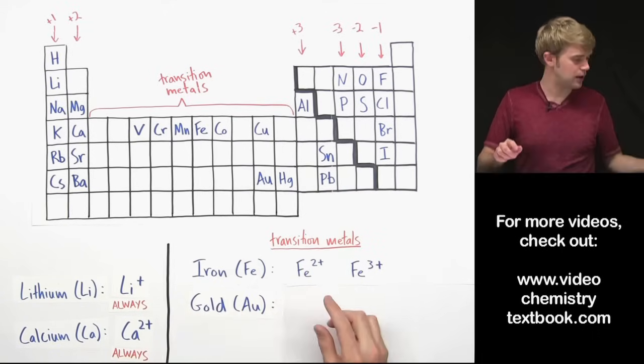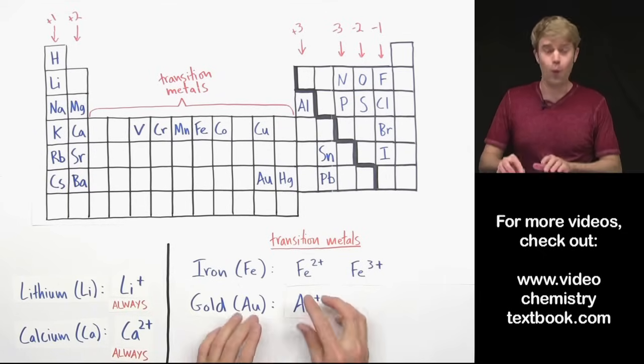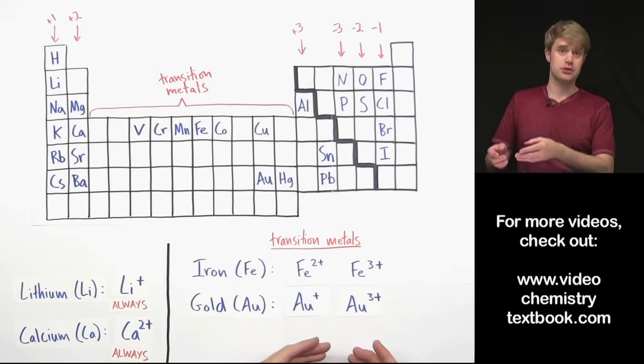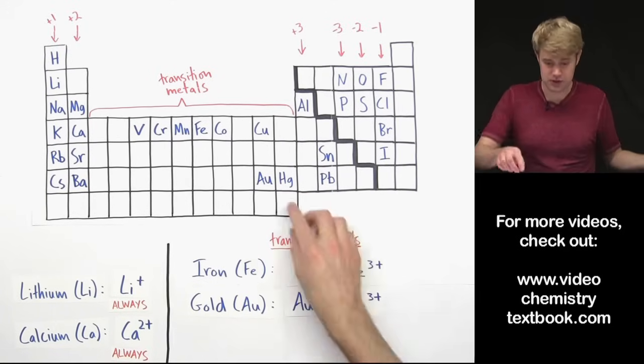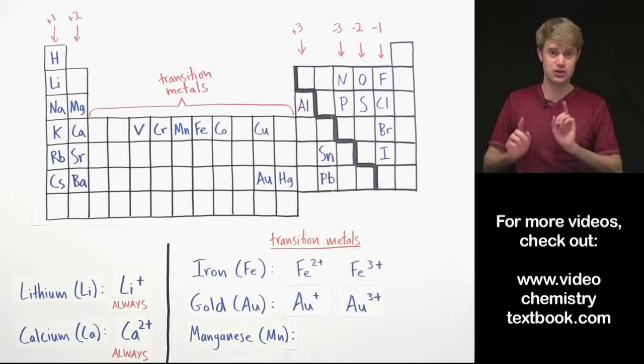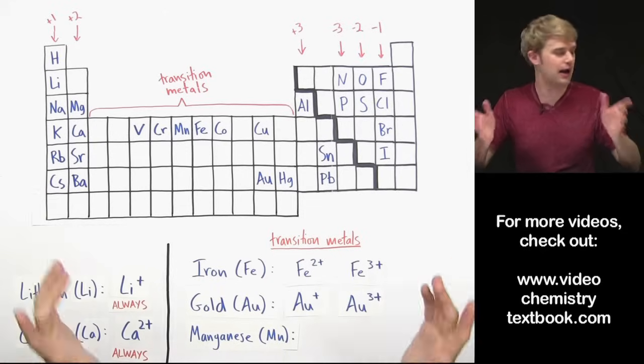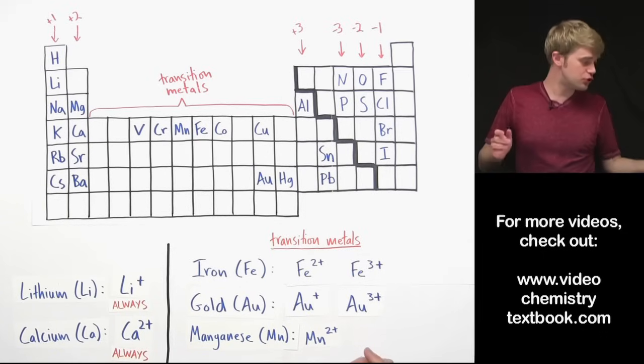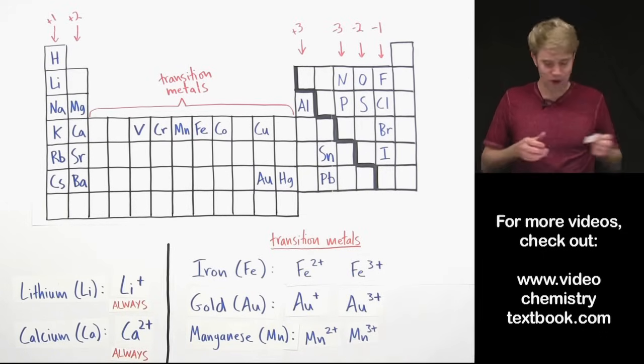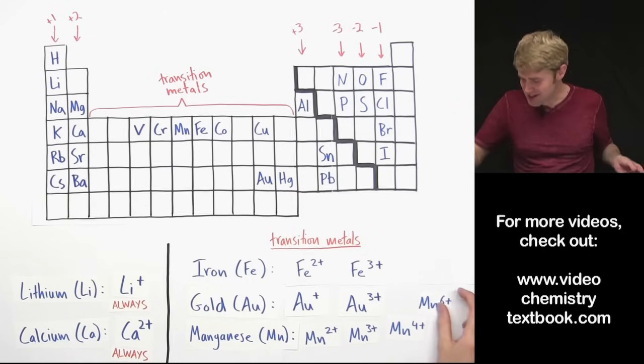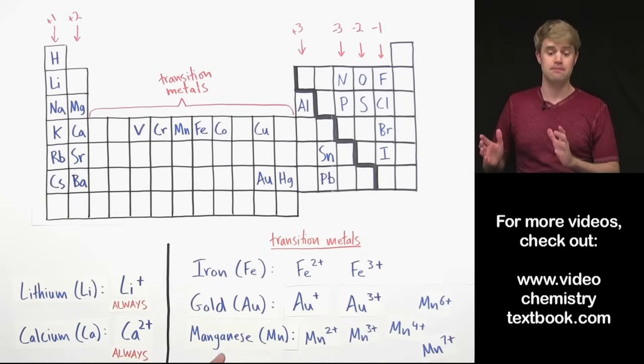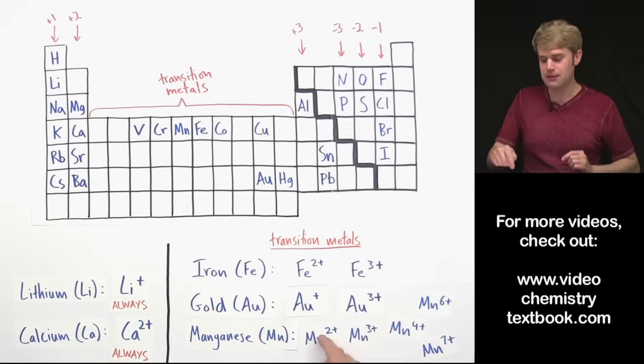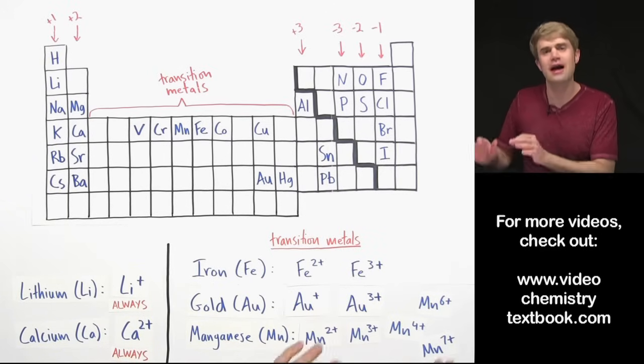Gold, which is another transition metal right here, can make Au+ with a 1+ charge, or it can make a type of ion that's Au3+. Manganese, which is right here, is one of the craziest of the transition metals because of the huge variety of ions that it can make. A manganese element can turn into Mn2+, or Mn3+, or Mn4+, or Mn6+, or Mn7+. So the point is, the transition metals can make multiple types of ions and these ions all have different charges.